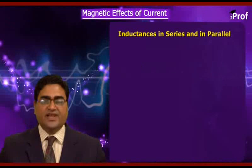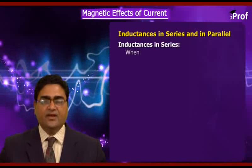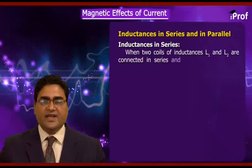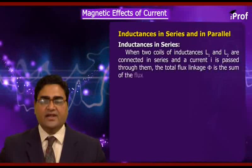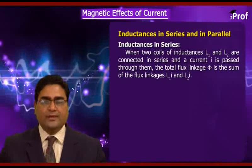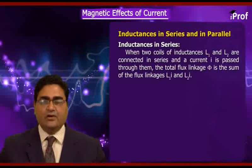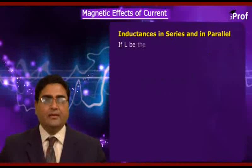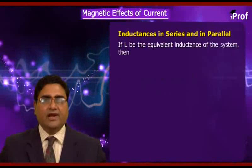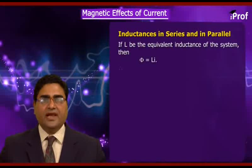Let's see inductances in series and in parallel. When two coils of inductances L1 and L2 are connected in series and a current I is passed through them, the total flux linkage φ is the sum of the flux linkages L1·I and L2·I — that is, φ = L1·I + L2·I. If L is the equivalent inductance of the system, then φ = L·I.